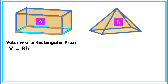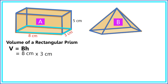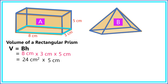This rectangular prism has length 8 cm, width 3 cm, and height 5 cm. Substituting into the formula: the area of the base is 8 cm × 3 cm = 24 square centimeters. Then 24 sq cm × 5 cm = 120 cubic centimeters.